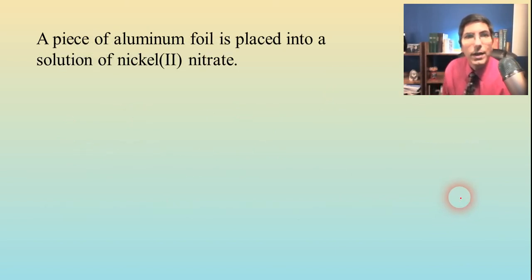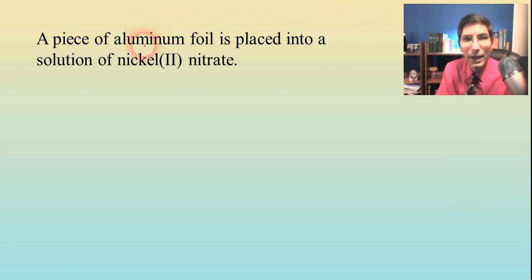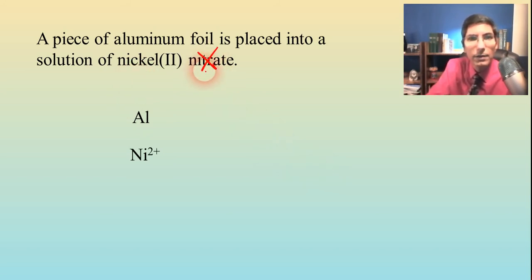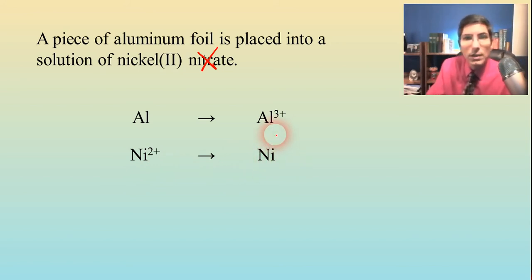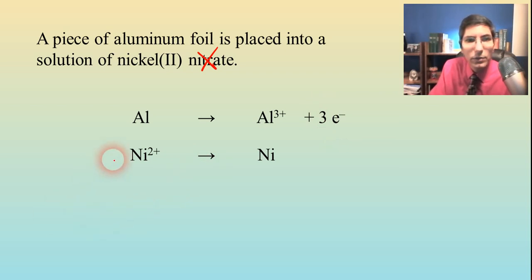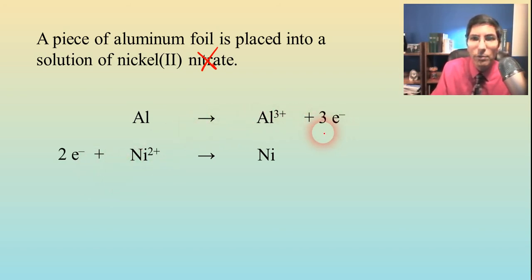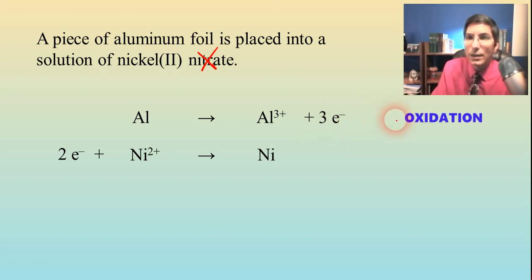Let's try another example. A piece of aluminum foil is placed into a solution of nickel(II) nitrate. A metal is reacting with a metal ion, so aluminum reacts with Ni²⁺ — we can ignore the nitrate spectator. Aluminum turns into Al³⁺ ions, and nickel(II) turns into nickel metal. We balance the half reactions: three electrons on the right for aluminum, and two electrons on the left for nickel. Aluminum is losing electrons — oxidation — and nickel is gaining electrons — reduction.